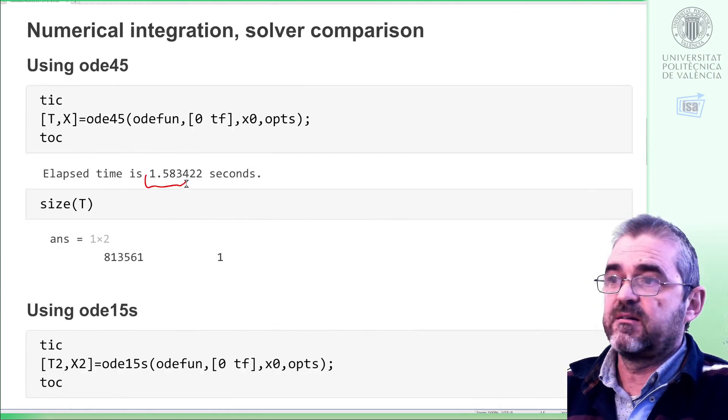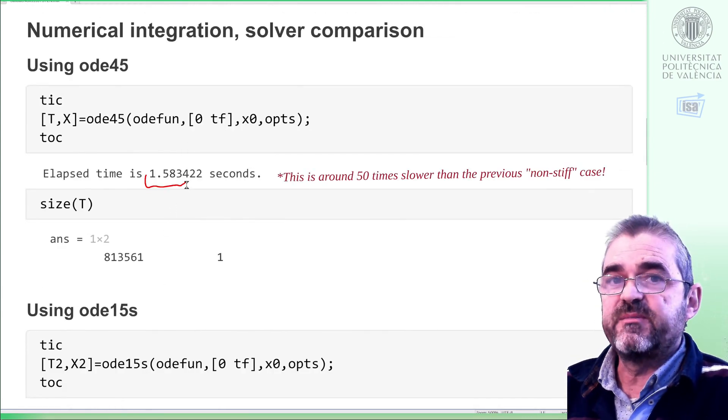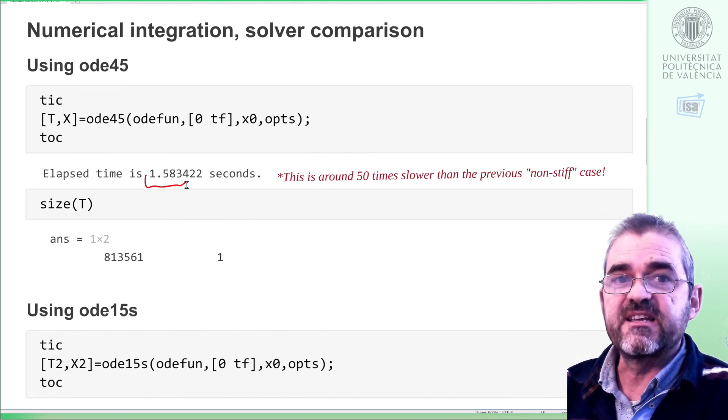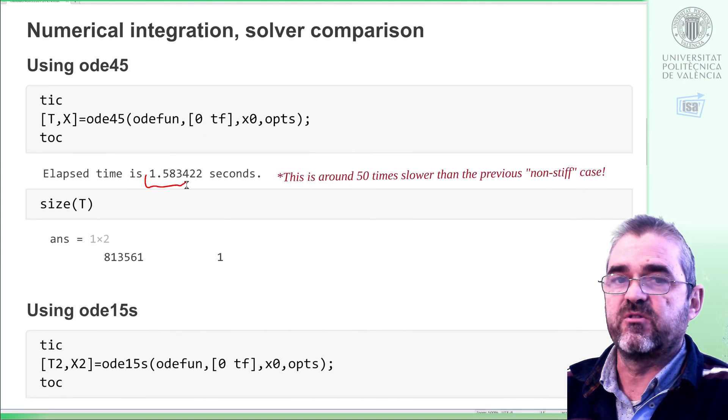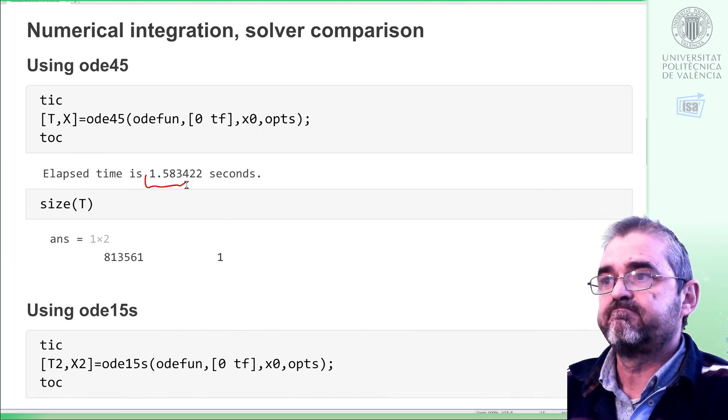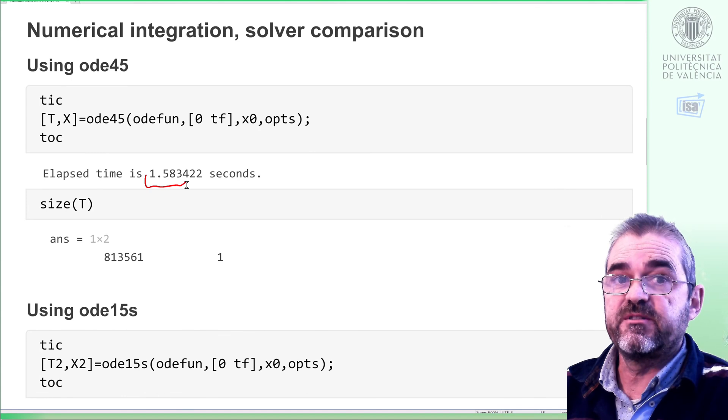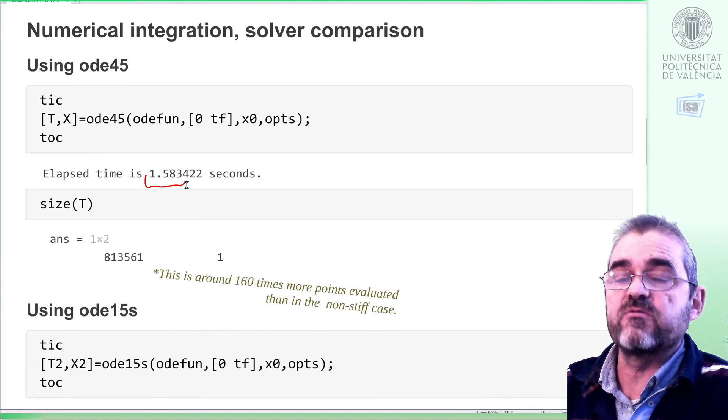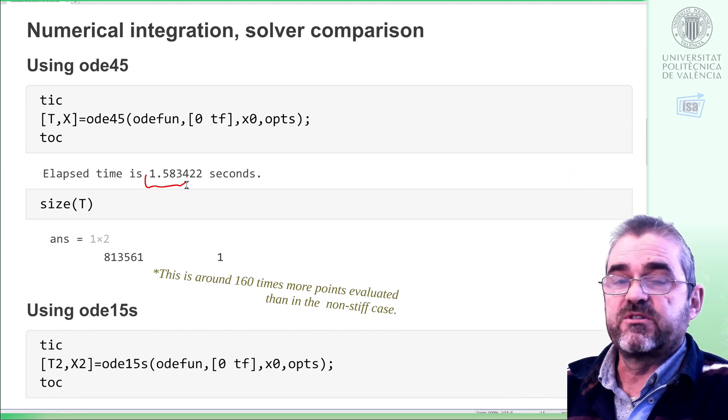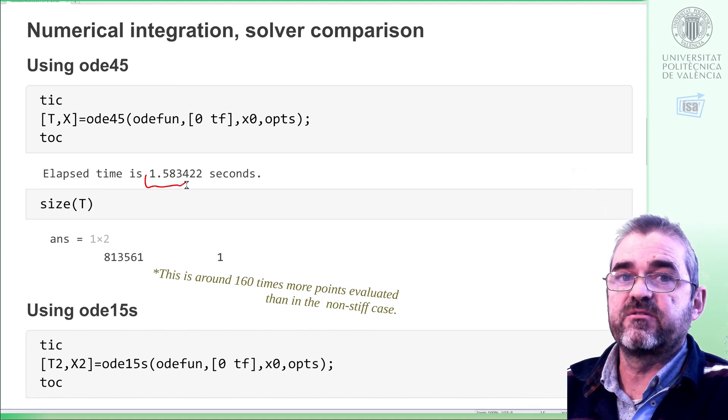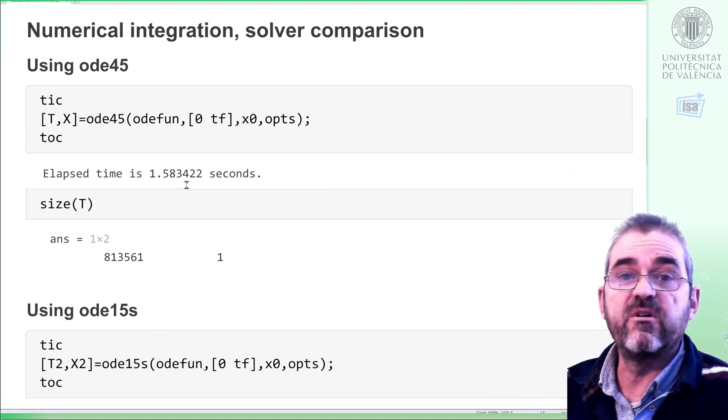Well, in this case, instead of 30 milliseconds, it took 1.6 seconds. So it's kind of 50 times longer than before. And instead of 5000 points, it needed to store in memory 800,000 ones. So it needed almost 200 more points to meet the desired tolerances.